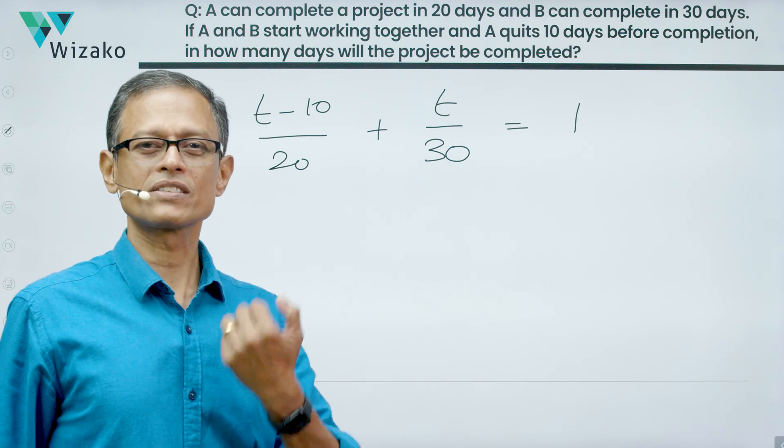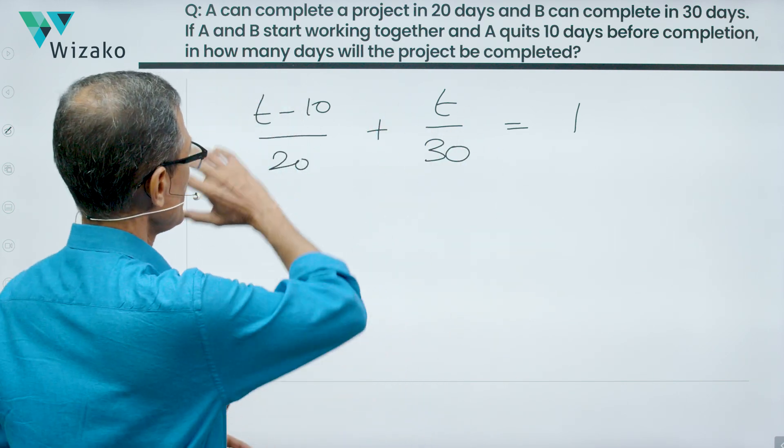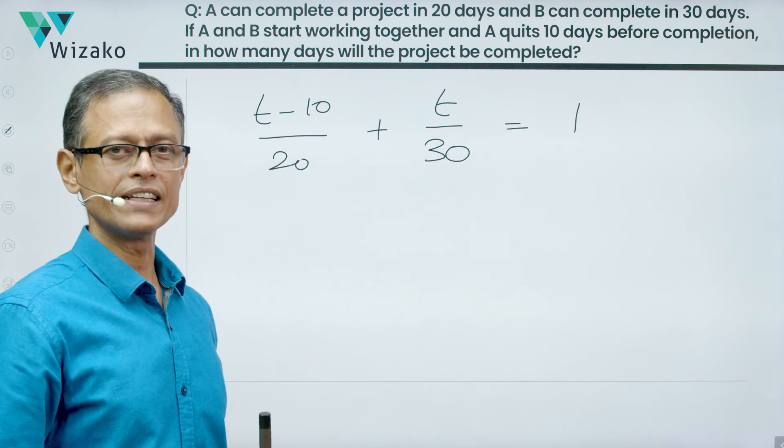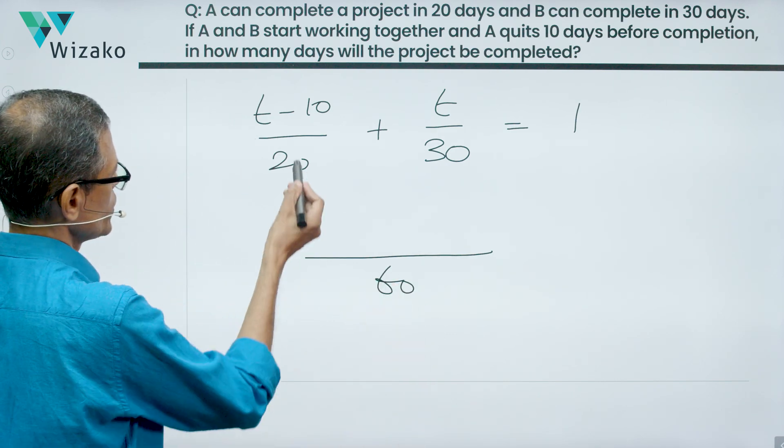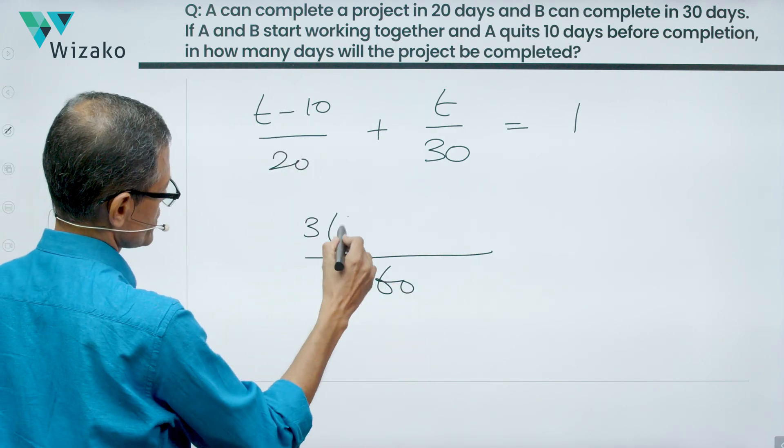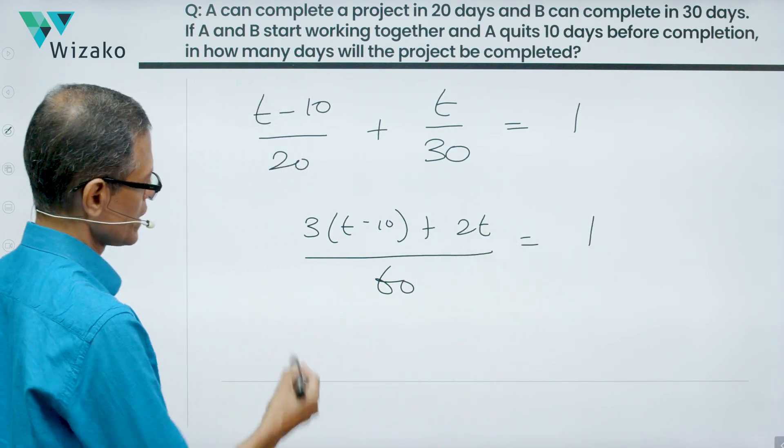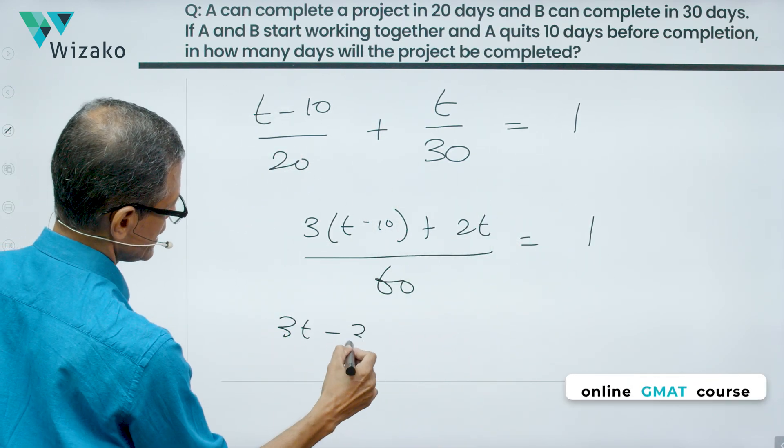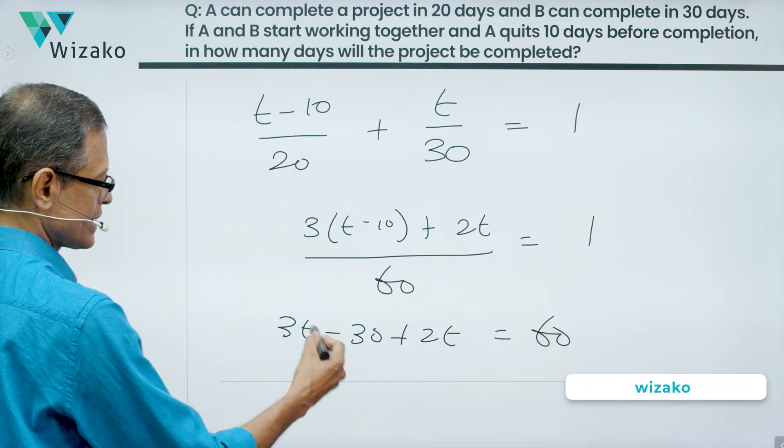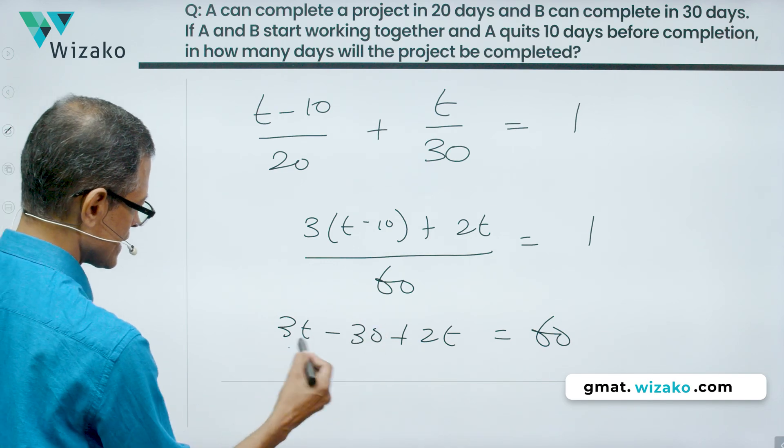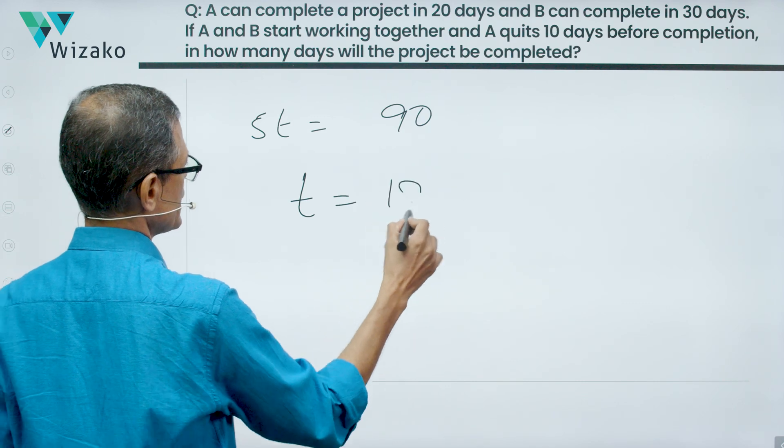What are we trying to find out? How long does it take to complete the project? We're trying to find out the value of T, which is what this question is all about. So we have one equation, one variable. Solve for it, we'll get the value of T and that's the answer. 20 and 30, the LCM is 60. That's a common denominator. So it's going to be 3 times (T minus 10). Here it's going to be 2 times T, which is equal to 1. Expand the numerator: 3T minus 30 plus 2T. Cross multiply, it's going to be equal to 60. Take the minus 30 to the right hand side and add these two T terms. So we're going to get 5T is equal to 90. T is equal to 18.